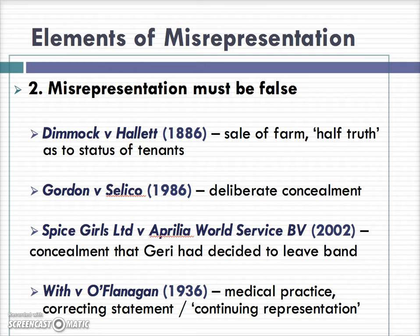Another case we've already looked at is Gordon v Selico. This was the case of painters covering up some dry rot so that the sellers of an apartment could conceal the fact that the apartment was in poor shape, and the buyers didn't spot this and so they went ahead with the transaction. This was a case of deliberate concealment, and the court held that this amounted to actionable misrepresentation.